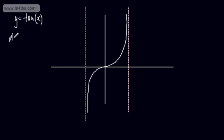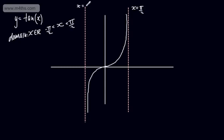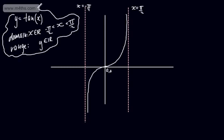The domain is x is a real number, and with a strict inequality x is between minus pi by 2 and positive pi by 2, since these are asymptotes. We can note the point 0 comma 0, and if we wanted, pi by 4 comma 1. The range is y is a real number — the function outputs all possible values as y goes across the entire y-axis.